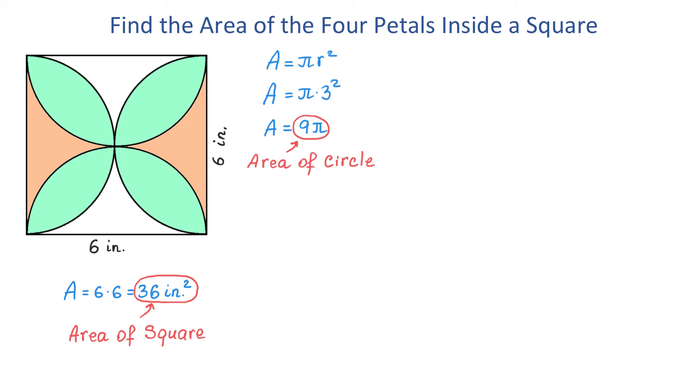To find the area of these two orange regions, we will take the area of the circle and subtract it from the area of the square. That is 36 minus 9 pi. This expression represents the area of the two orange regions.